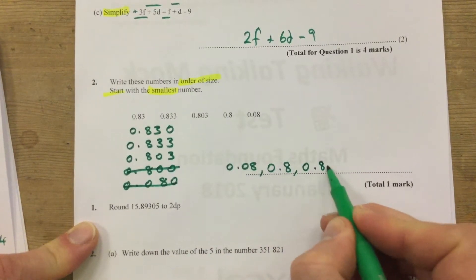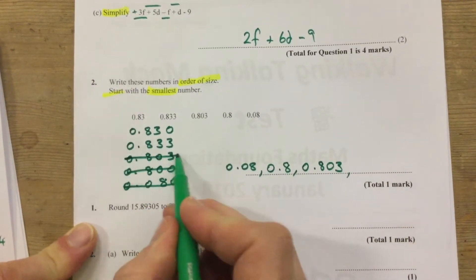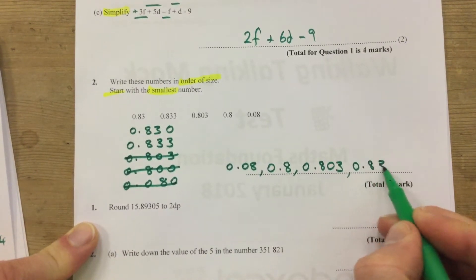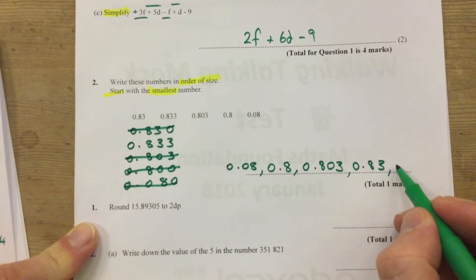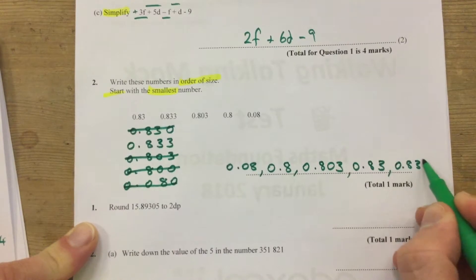Then it will be 0.803, then 0.83, and then finally, 0.833.